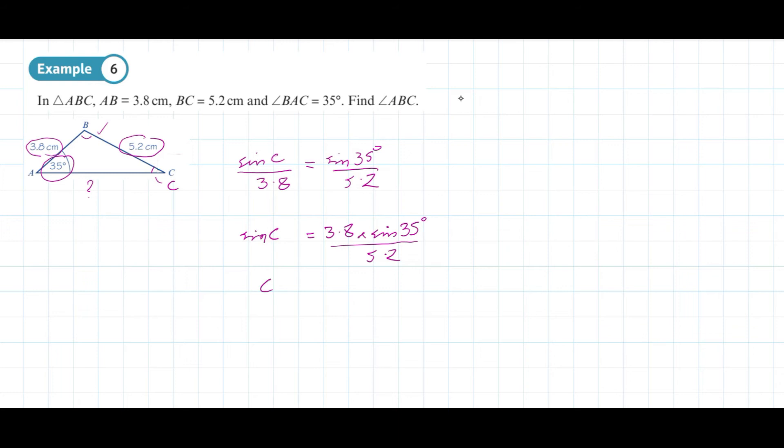We can work that out as C equals sine inverse of 3.8 times sine of 35 degrees all divided by 5.2. Putting that in as an expression avoids any rounding errors. We can work out that angle C is going to be 24.8 degrees to 3 significant figures.